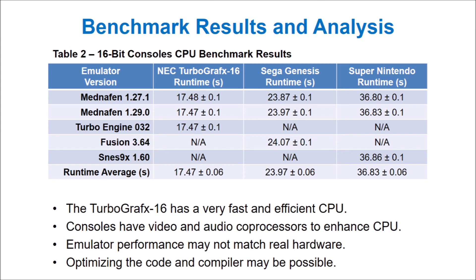However, it's important to remember that the CPU is only one aspect, and each console has supporting video and audio coprocessors that help to enhance the CPU. The Super Nintendo especially relied on these coprocessors to achieve its high game quality. While emulator results are likely accurate, it would be ideal to run these same tests using the real hardware. It may also be possible to optimize the code and compiler to improve each console's performance.